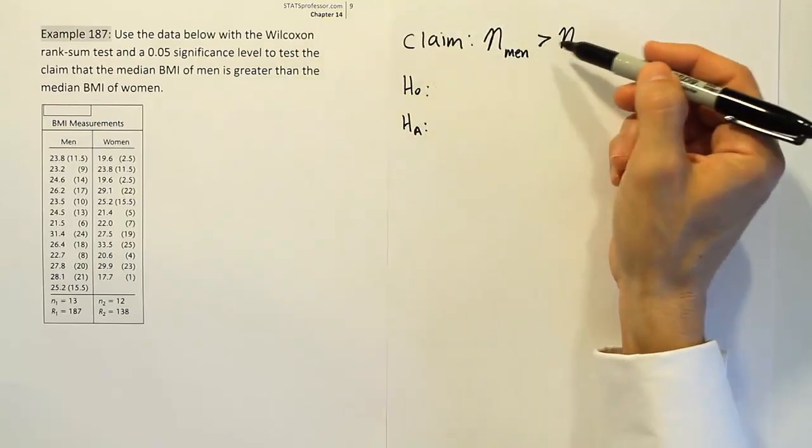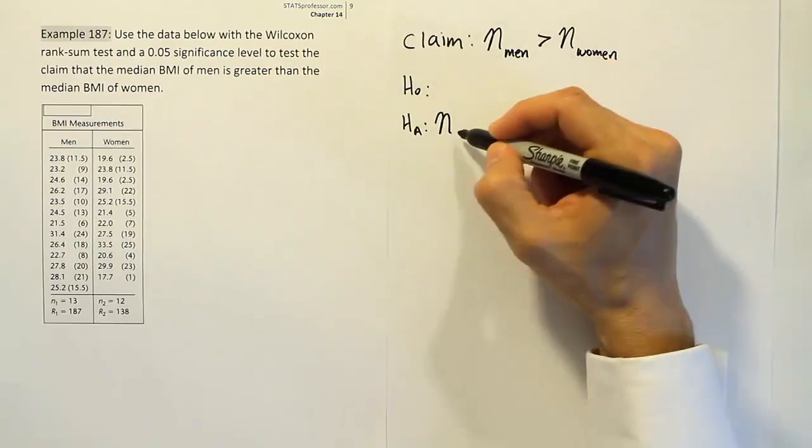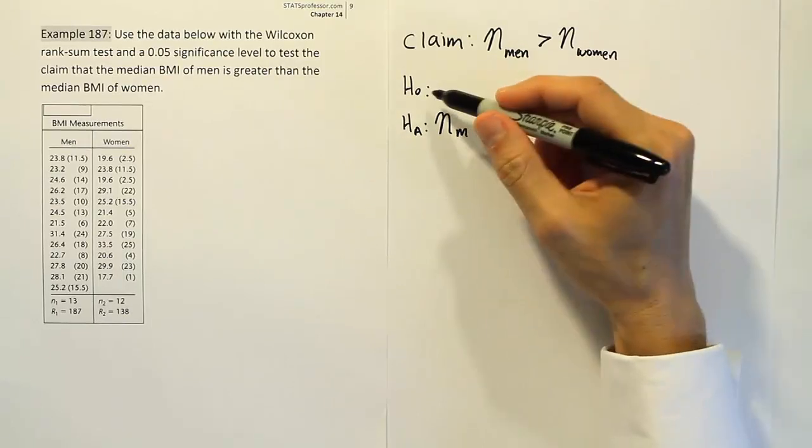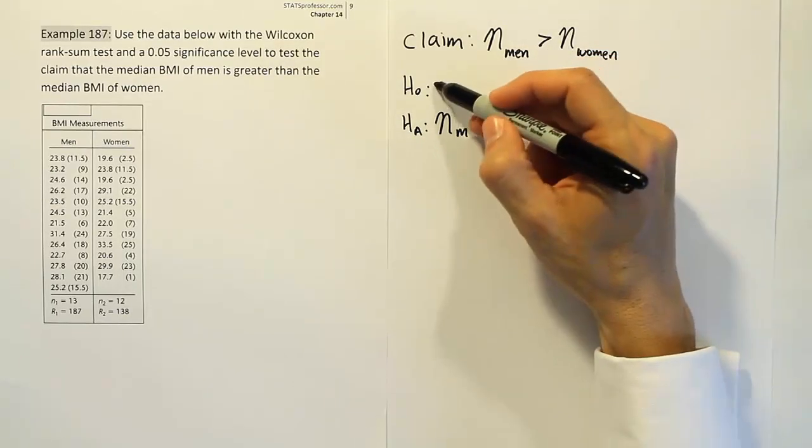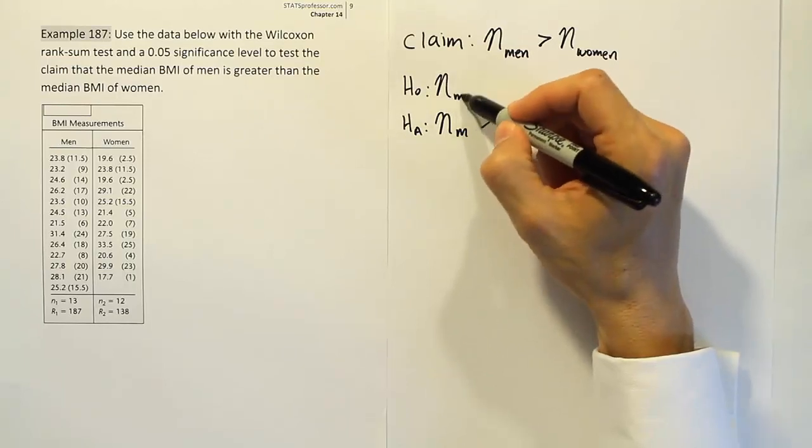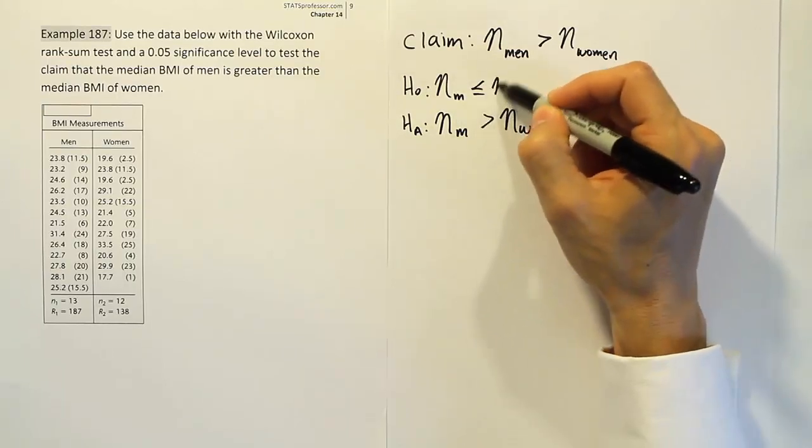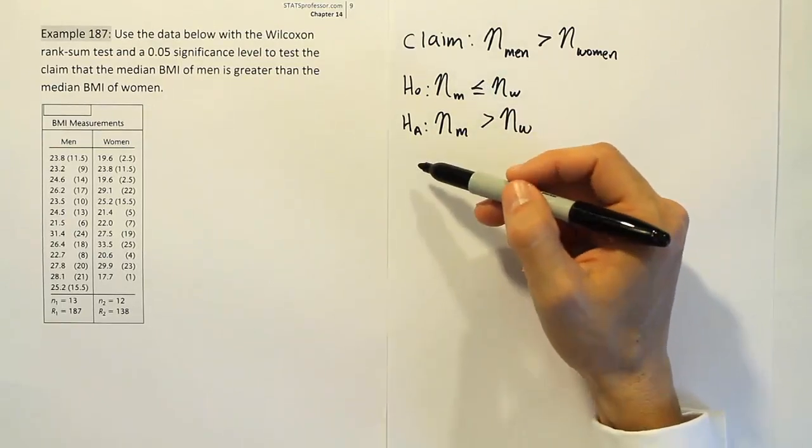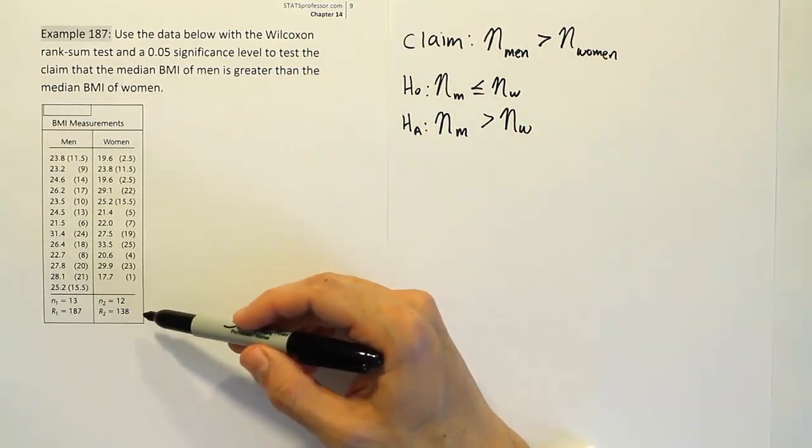So we write that out and then we'll have H0 and HA. And when you look at the claim here you see the greater than symbol that indicates it's HA. And then for the H0 of course it would be the opposite idea so we'll say less than or equal to. So we have claim, H0, and HA and now we'd normally rank the data and come up with the sample sizes and all that, but that's been done for us so we don't have to do that.